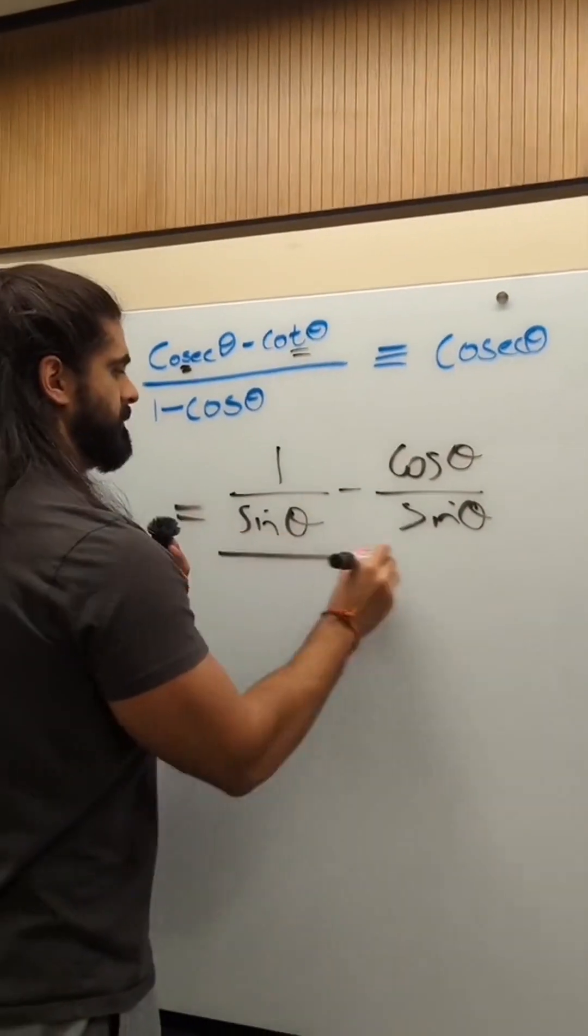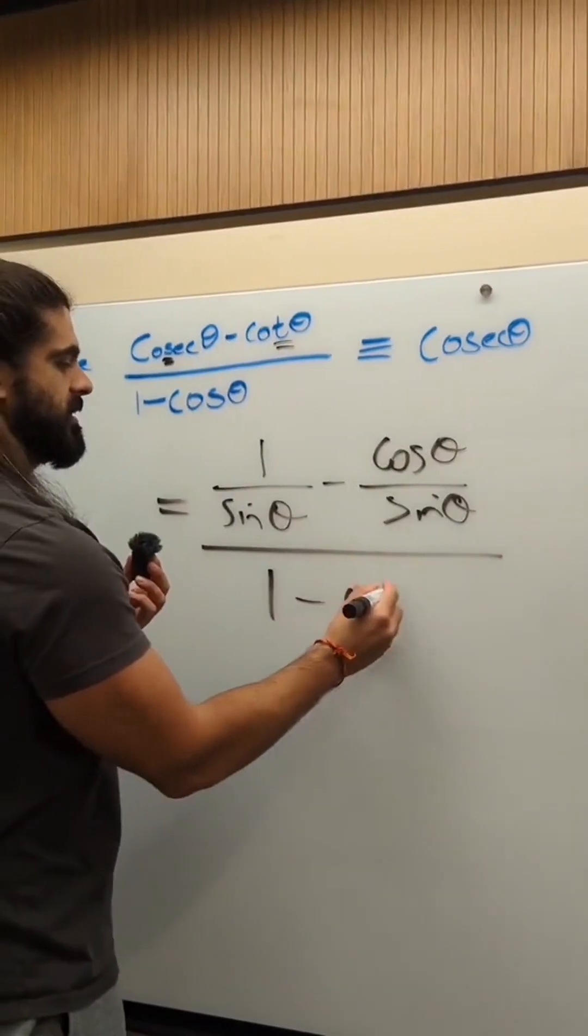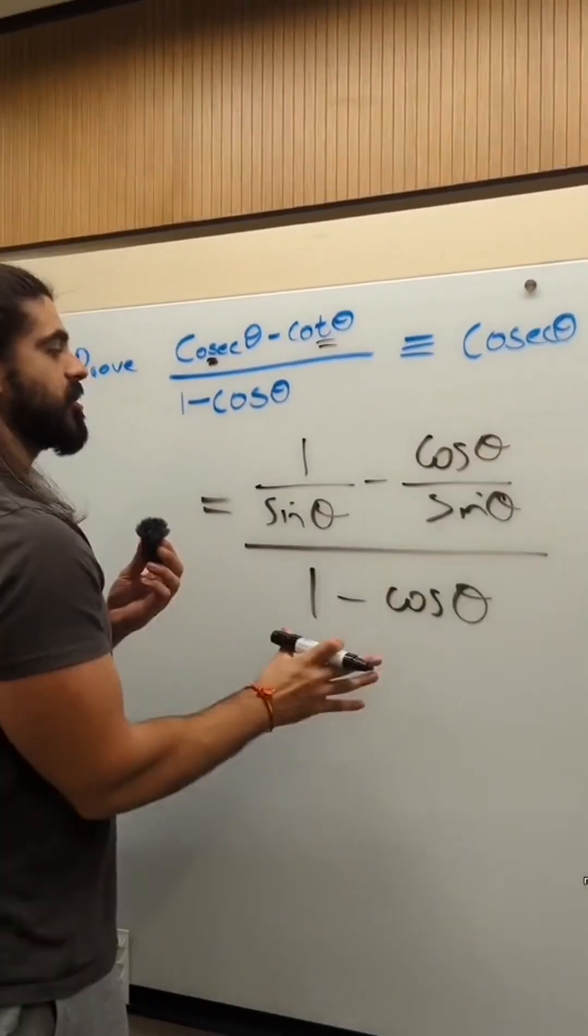All over 1 minus cos theta. Now, this looks horrible, right?